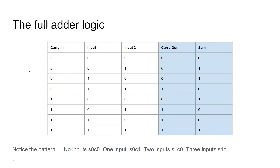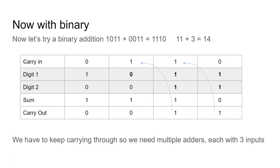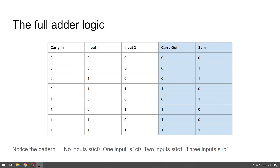The most important difference between the half adder we've just used and what we need for a full adder is that the half adder can only cope with the right-hand bit. The other bits all have a potential carry-in, so we need some kind of logic circuit to cope with this carry-in. Let's look at the truth table for full adder logic.